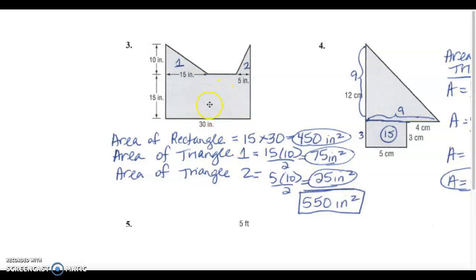My area of my rectangle was right here. Again thirty times fifteen is 450. For the area of triangle one I numbered them one and two so that you could see which area I found. The area of triangle one had a base of fifteen and a height of ten. So the formula is base times height divided by two and that gave me seventy five.